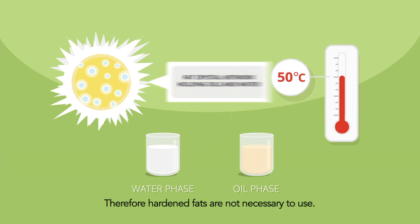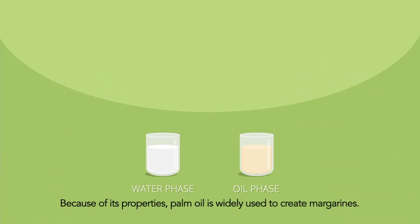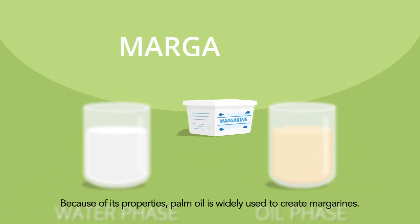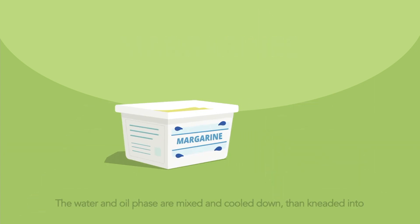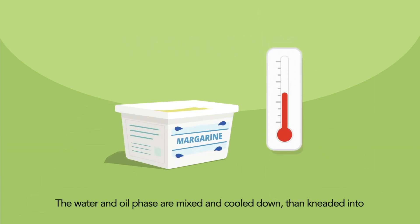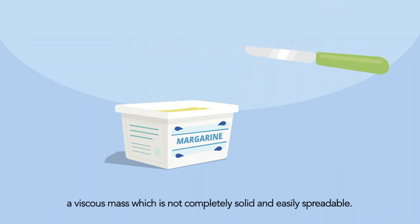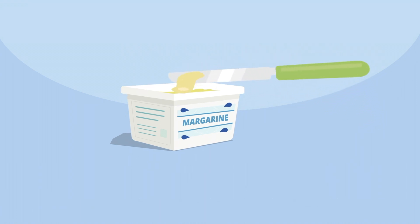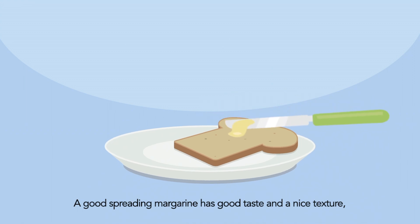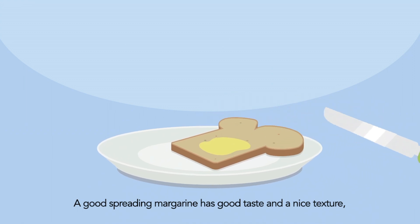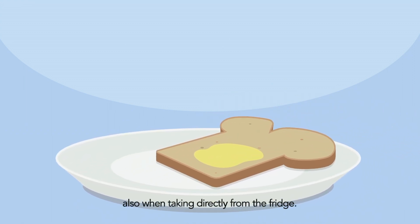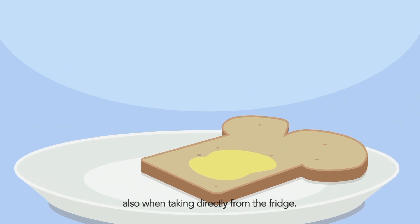Therefore, hardened fats are not necessary to use. Because of its properties, palm oil is widely used to create margarines. The water and oil phase are mixed and cooled down, then kneaded into a viscous mass which is not completely solid and easily spreadable. A good spreading margarine has good taste and a nice texture, also when taken directly from the fridge.